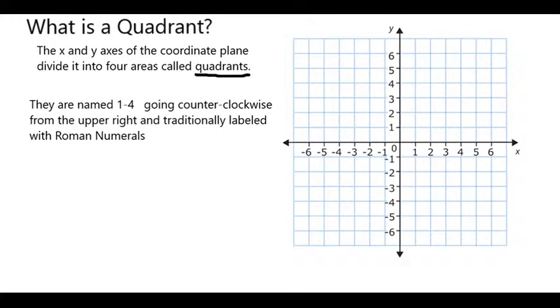The four areas that the x and y-axis divide the coordinate plane into are called quadrants, and they are typically numbered using Roman numerals.